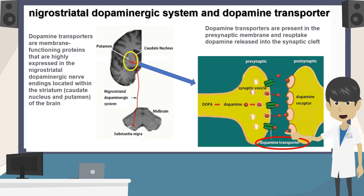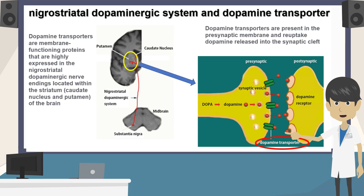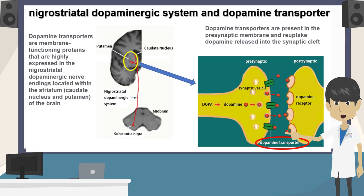Dopamine transporters are present in the pre-synaptic membrane and reuptake dopamine released into the synaptic cleft. When there is degeneration or loss of nigrostriatal dopaminergic innervation, dopamine transporters decrease along with dopamine.